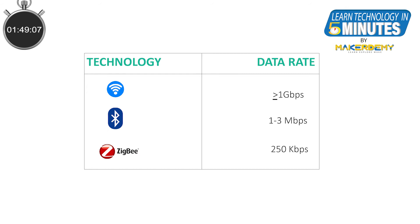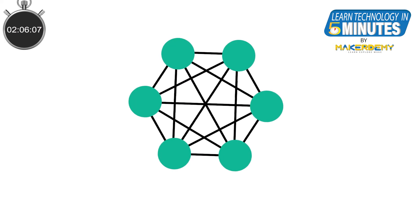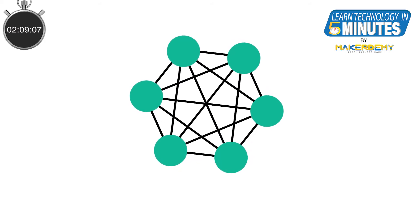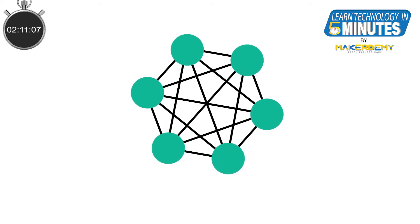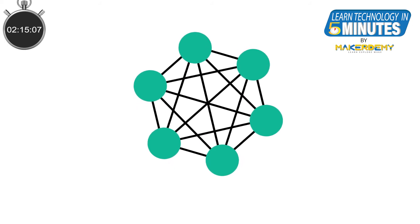This low data rate is the trade-off we need to live with, because we are optimizing for low-power network protocols that can connect many devices. A single Zigbee-enabled device can reach up to a range of 10 to 20 meters indoors in search of another Zigbee device present in the network. Zigbee operates in a mesh topology, which helps a Zigbee device to transfer its messages to its destination via a number of intermediate Zigbee devices connected within the network.